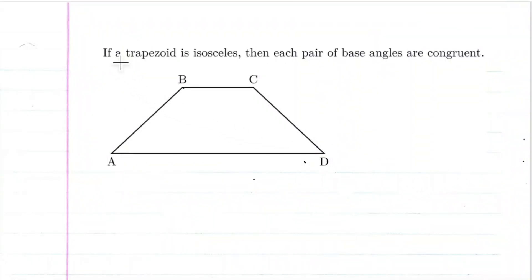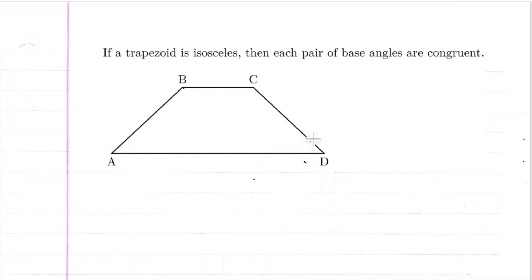We're going to prove that if a trapezoid is isosceles, then each pair of base angles are congruent. So a pair of base angles: angle B would be congruent to angle C, and angle A would be congruent to angle D. That's what we're trying to prove — that B is congruent to C, and angle A is congruent to angle D.